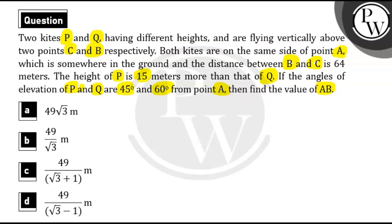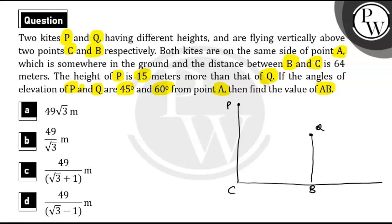So first of all, we are given two kites P and Q having different heights. Let's say this is point P and this is point Q. These kites are flying at different heights vertically above two points C and B respectively. So P is above point C, and Q is above point B. Both kites are on the same side of point A, which is somewhere on the ground. So this is the ground, and somewhere here is point A. From A, P and Q are on the same side.